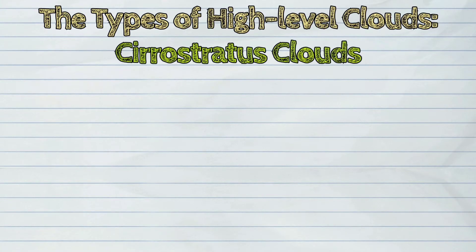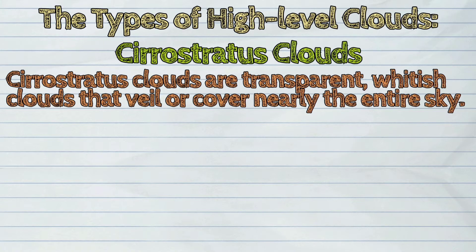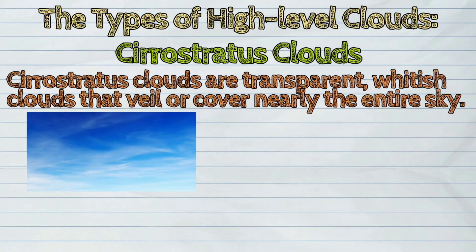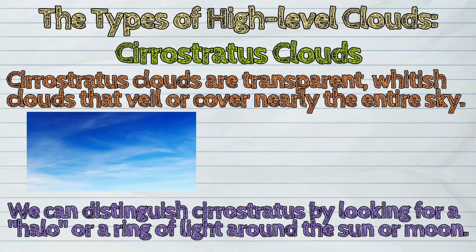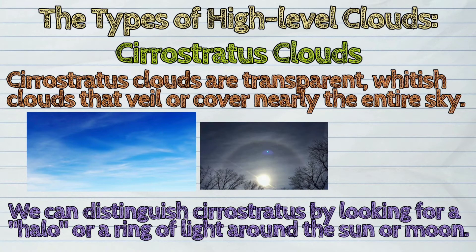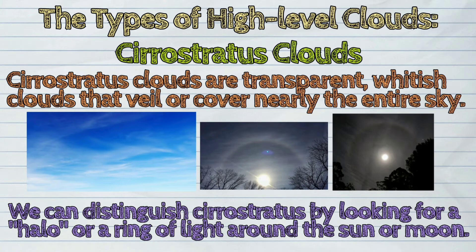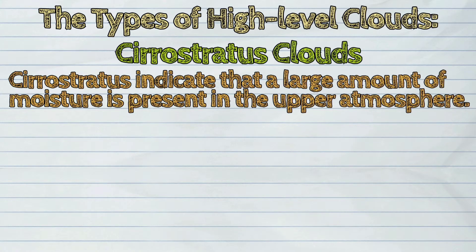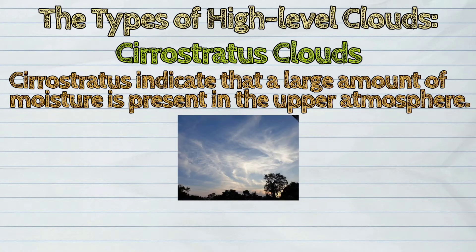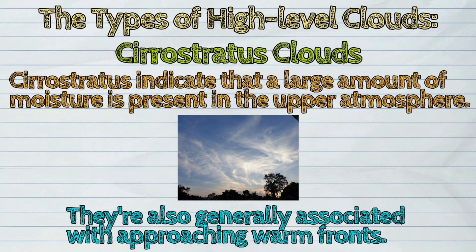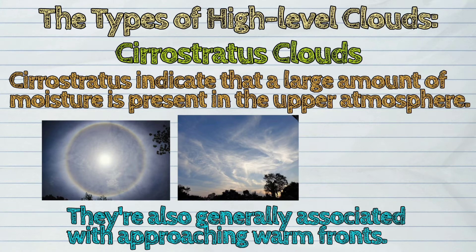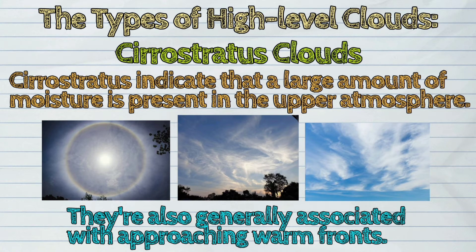First, the cirrostratus clouds. Cirrostratus clouds are transparent, whitish clouds that veil or cover nearly the entire sky. We can distinguish cirrostratus by looking for a halo or a ring of light around the sun or moon. Cirrostratus indicate that a large amount of moisture is present in the upper atmosphere. They are generally associated with approaching warm fronts.